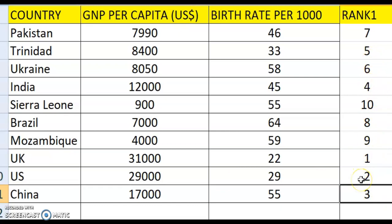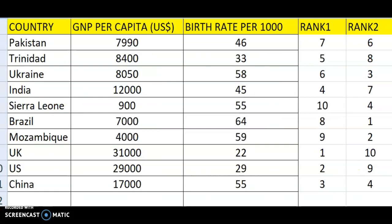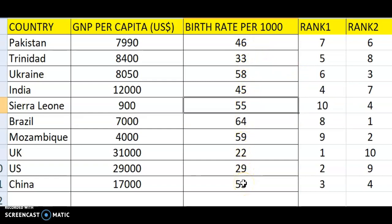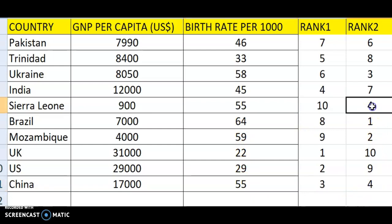Now for birth rates per 1000, be very careful with the ranking here. I used the same approach — the highest value of 64 gets rank 1. However, there are two countries with the same value: 55 for Sierra Leone and 55 again for China. They will occupy the same rank, which is rank 4.